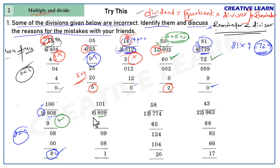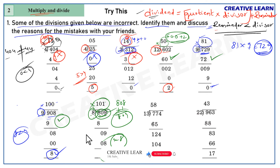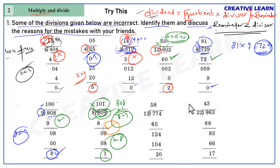Next, 809 divided by 8: remainder 1, divisor 8. Since 1 < 8, second rule is satisfied. First rule: 101 × 8 = 808, plus remainder 1 = 809, which equals the dividend. So this division is correct.